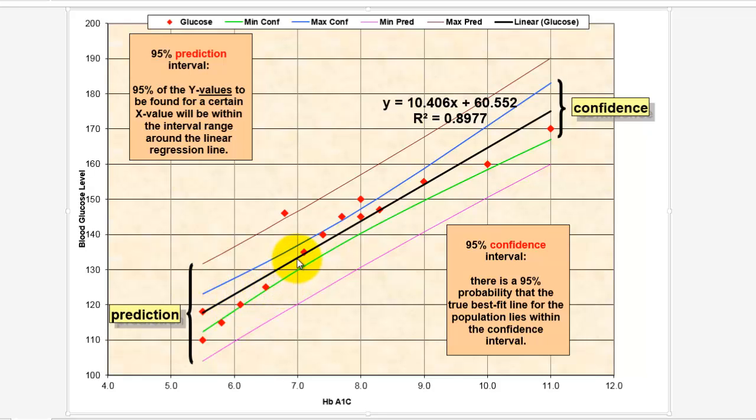We want to find the 95% prediction interval, which has the upper bound here and the lower bound here, and the 95% confidence interval. What's the difference between those two?